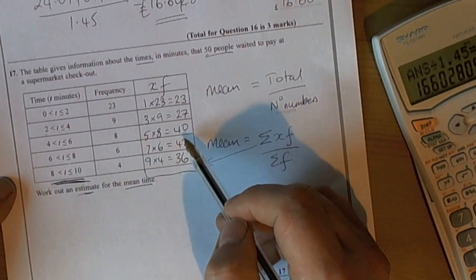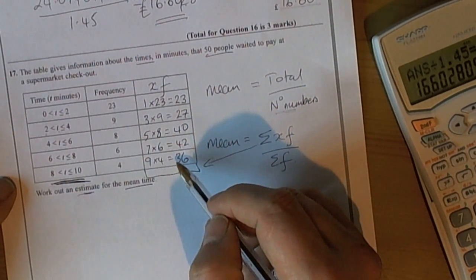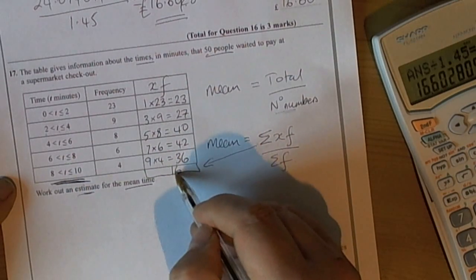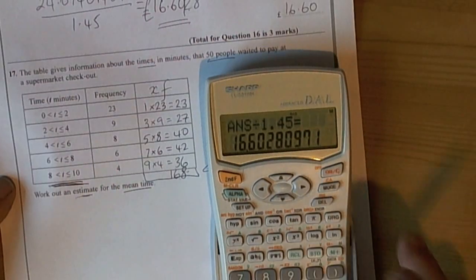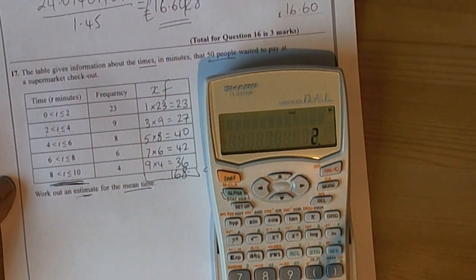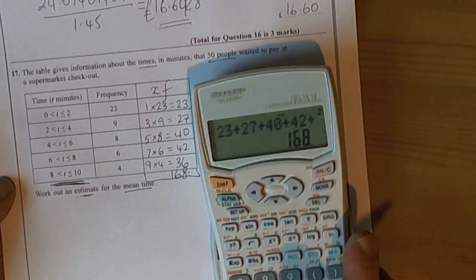So 23, 50, 90, 132, 162, 168. The total is 168. Do a quick check on the calculator to make sure: 23 plus 27 plus 40 plus 42 plus 36 equals 168.